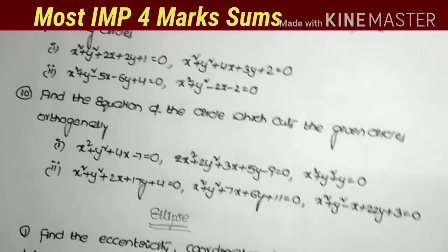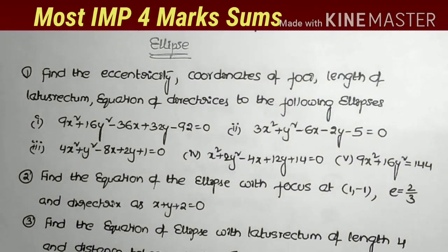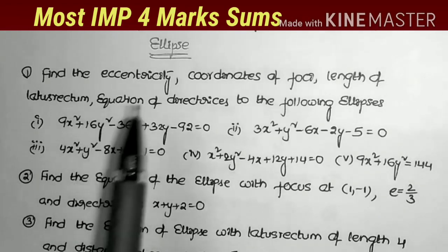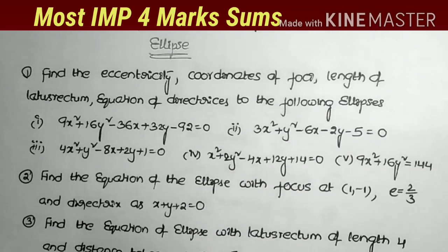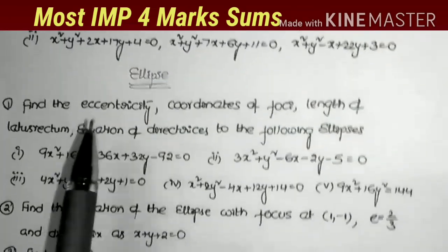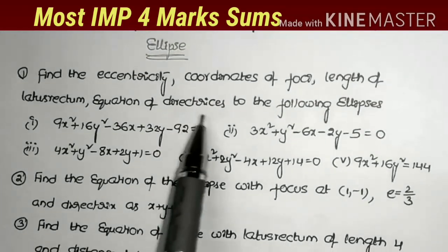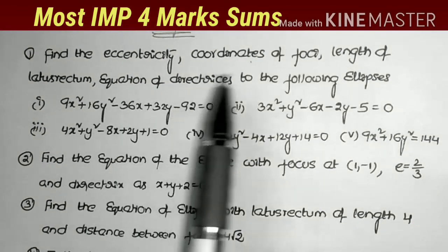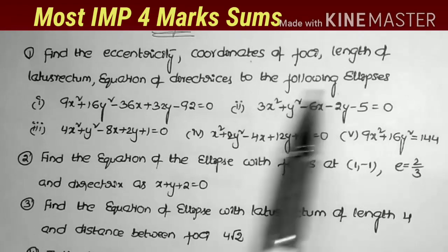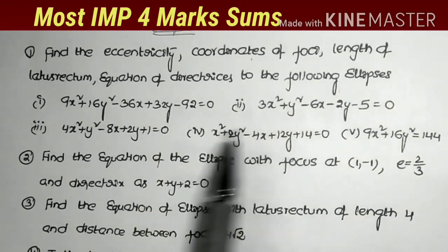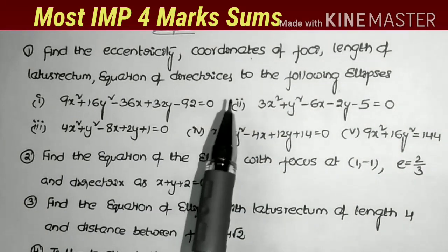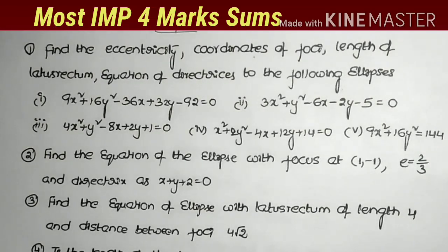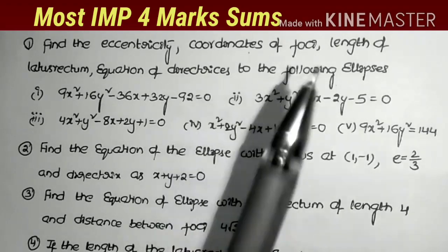Coming to the third chapter: ellipse. From the ellipse chapter, two 4-mark sums come in the public examination — a very important chapter. First and most important model: find the eccentricity, coordinates of foci, length of the latus rectum, and equations of directrices for the following ellipses. There are five problems of this model, and we expect a guaranteed problem from these five in the 2021 public examination.